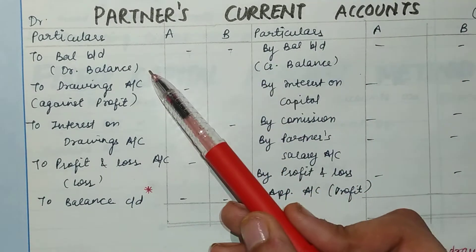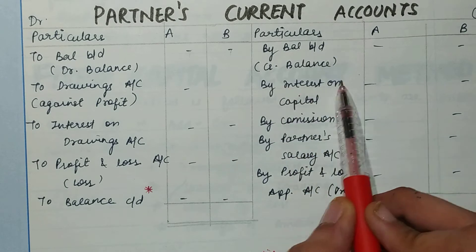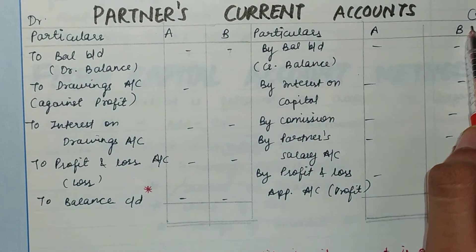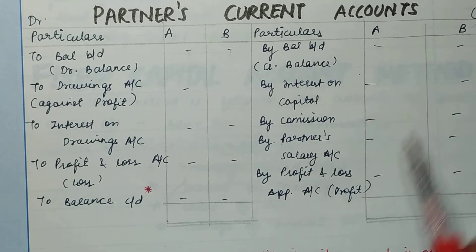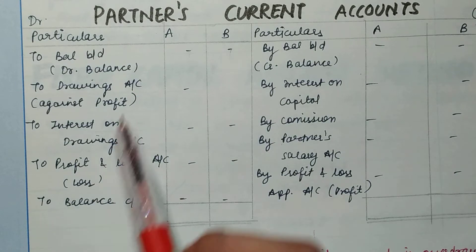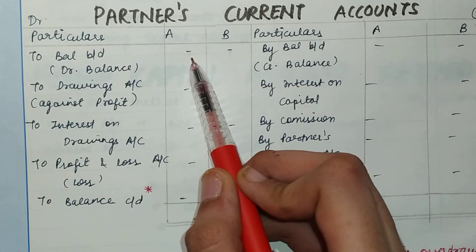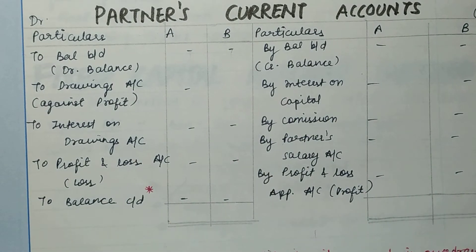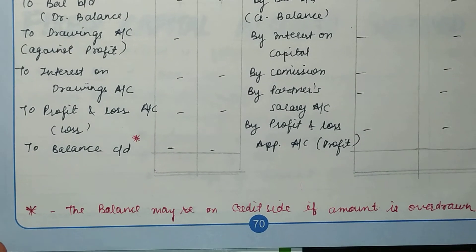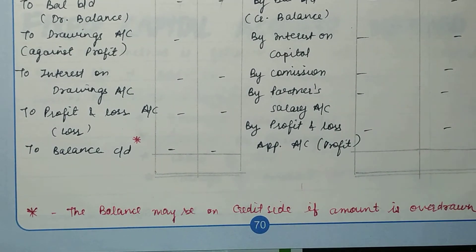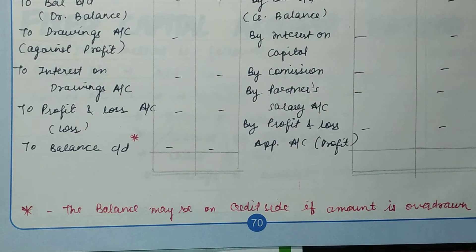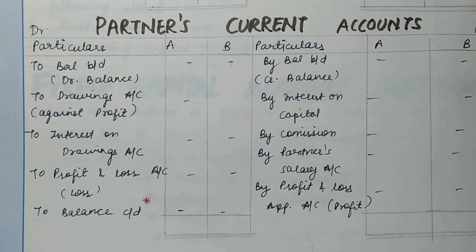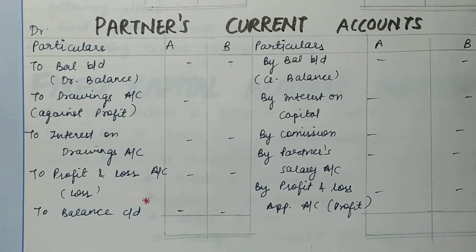In the current account: profit is on the credit side, loss is on the debit side. Interest on capital, commission, and salary are all on the credit side. Drawings against profit and interest on drawings are on the debit side. The balancing figure can come from both sides — it depends on whether the partner has overdrawn or has net earnings.